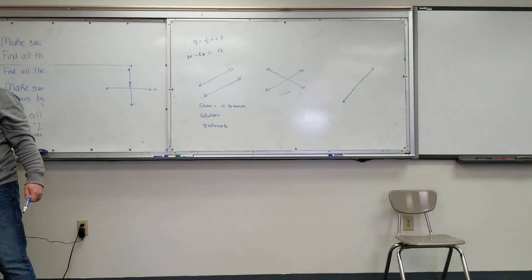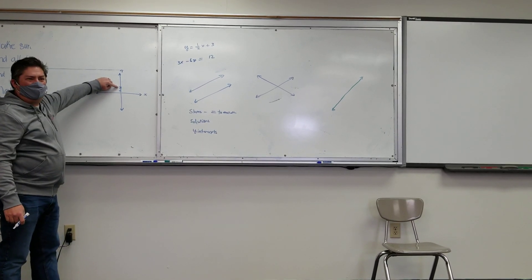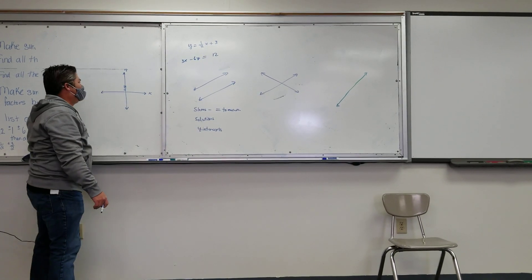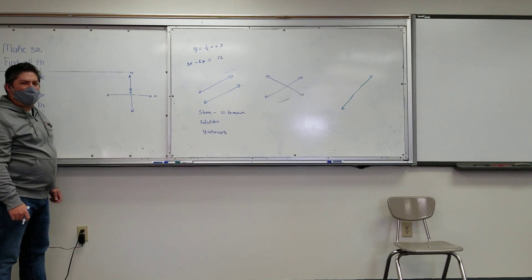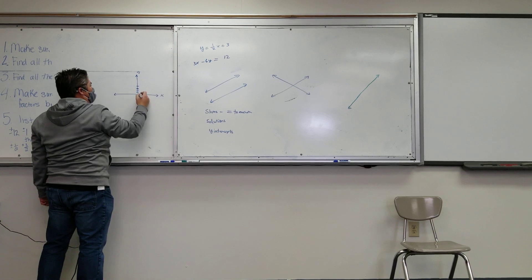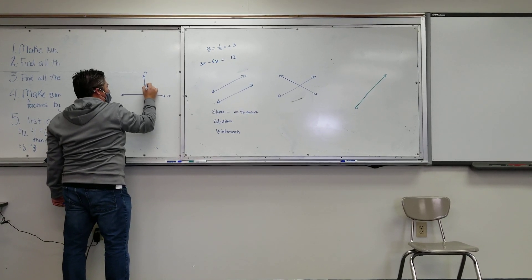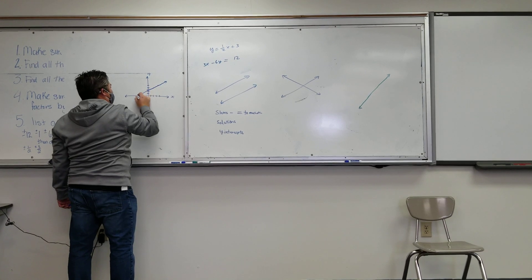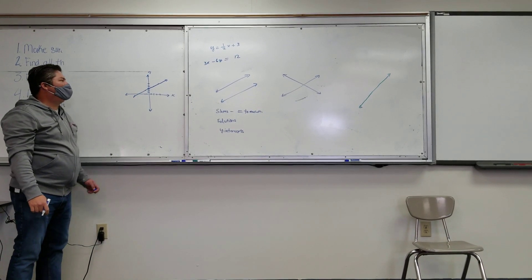The y-intercept is where we start — that's the number part being added, not the fraction in front of the x. What's the slope I'm going to follow if I start here at three? Go up one and over two. I can keep going up one and over two — I usually make three points to get a good look. You can also go down one and over to the left two, and it should match.